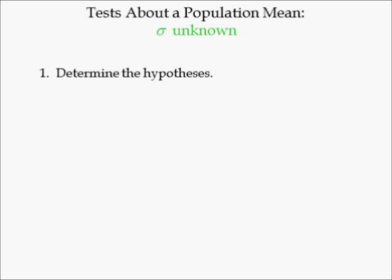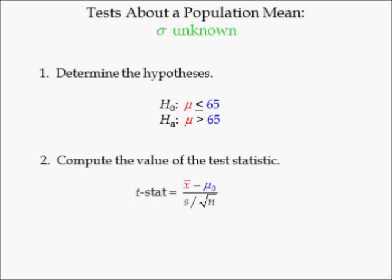In step one, we determine the hypotheses. Since the speed trap is usually determined by whether drivers are complying with the posted speed limit of 65 miles per hour, the null hypothesis is population mean mu is less than or equal to 65 miles per hour, while the alternative hypothesis is population mean mu is greater than 65 miles per hour. If the alternative is true, the location needs a speed trap.